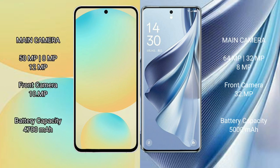Samsung Galaxy S24 FE features a Triple Camera Setup with a 50MP main camera, 8MP and 12MP lenses, and a 10MP front camera. Oppo Reno10 also has a Triple Camera Setup with a 64MP main camera, 32MP and 8MP lenses, and a 32MP front camera.